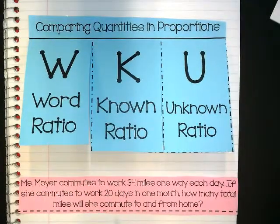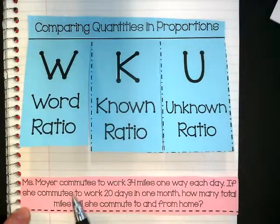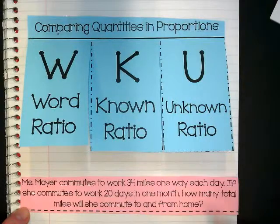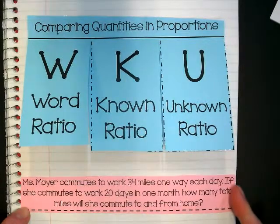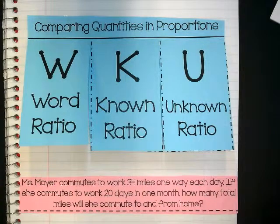We need to set up a proportion for the problem here. Miss Moyer commutes to work 34 miles one way each day. If she commutes to work 20 days in one month, how many total miles will she commute to and from?